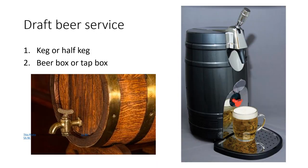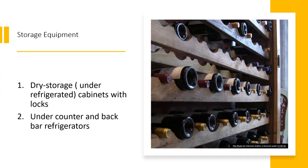Examples of equipment for bars serving draft beer include a keg or half keg, and a beer box or tap box. For dry storage equipment, we have dry storage cabinets with locks, and under-counter and back bar refrigerators. The counters in the front bar can have a built-in chiller or refrigerator underneath, and the back bar where wines and decor are stored can also have a built-in refrigerator or chiller underneath.